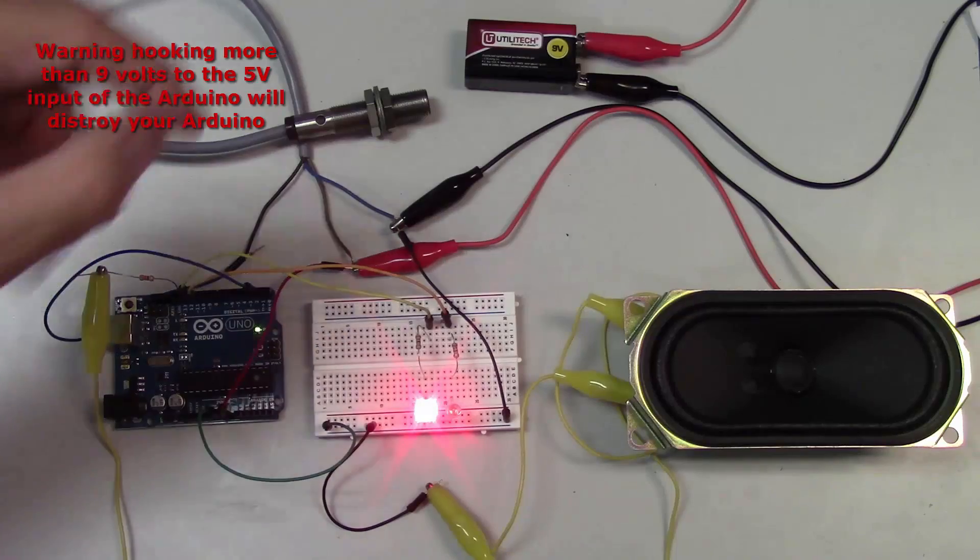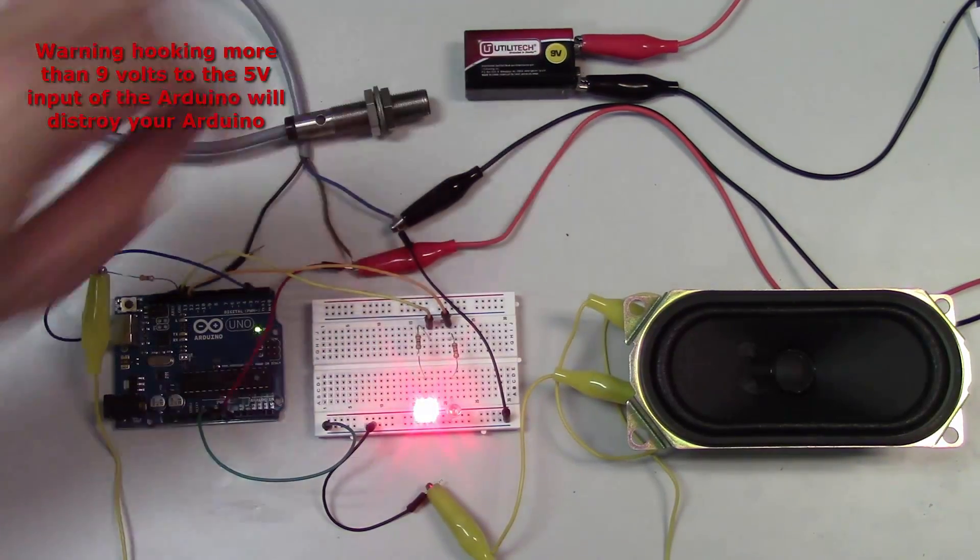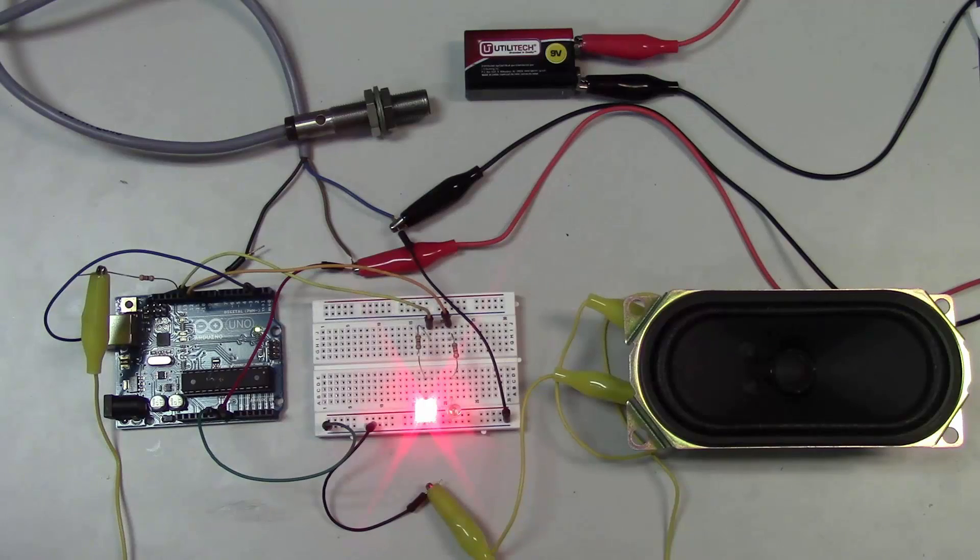So be very careful that you never hook a 9 volt battery or any other power source other than 5 volts to the 5 volt supply on the Arduino. It's okay to hook it to VIN but the upper limit is about 12 volts so you don't want to go above 12 volts or you risk burning out the regulator on the Arduino.